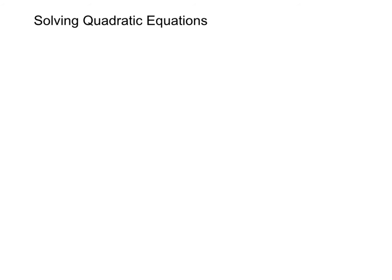Let's say if we have two numbers a and b, and we set the product of a and b equal to zero — that is, a times b equals zero. What can we say about these two numbers a and b if the product of them is zero?